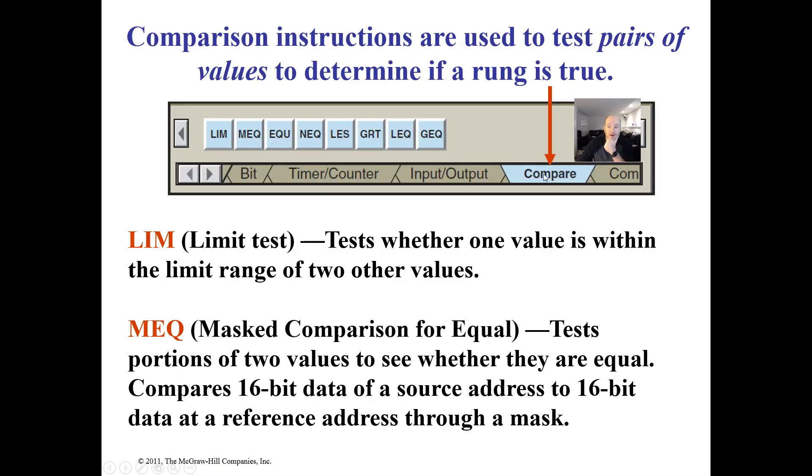First of all, these are in the compare instruction bin, where we have our equal to, not equal to, less than, greater than, less than equal to, greater than equal to. We also have two other instructions in here: the limit test, which I'm a big fan of, and the masked comparison for equal test, which to be open and honest I've actually never used before and I've never seen it used in a program.